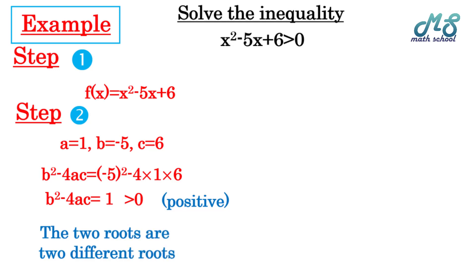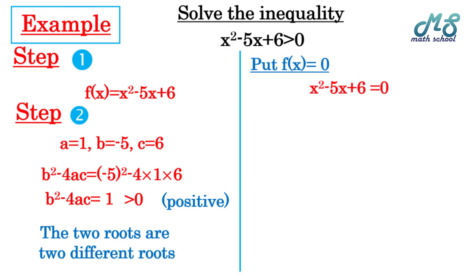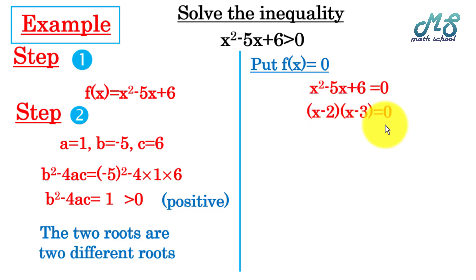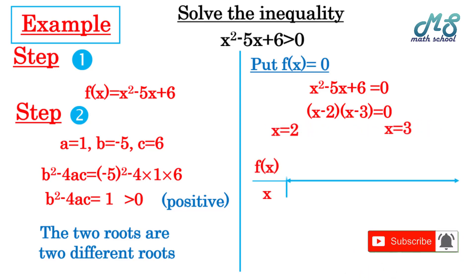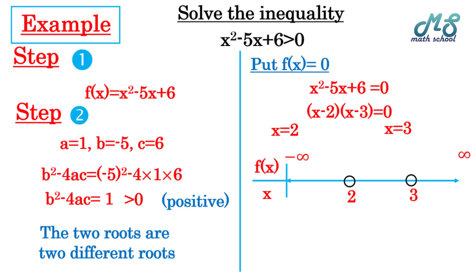To find the two roots, set f(x) = 0: x² - 5x + 6 = 0. By factorizing the left-hand side we get (x - 2)(x - 3) = 0 — two numbers whose product is 6 and sum is 5, with the same sign as the middle term. So x = 2 and x = 3. At x = 2 and x = 3 the points will be open (not shaded) because the sign is strictly greater than, meaning f(x) = 0 there.